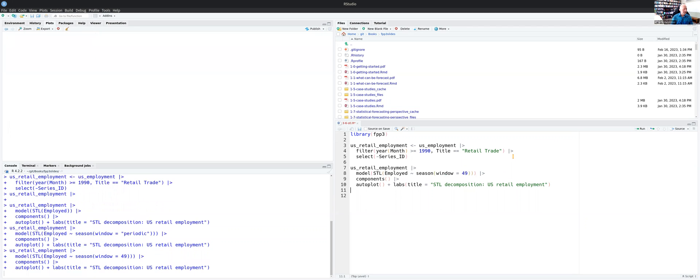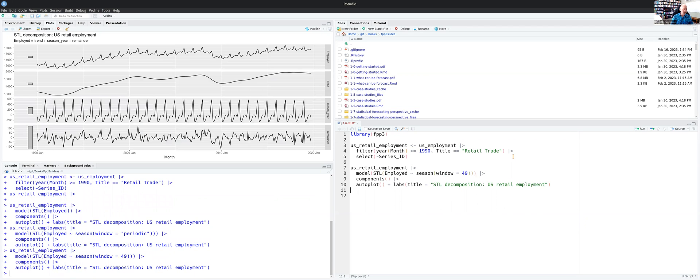which means that when it averages the seasonal patterns to form the moving average of seasonal components, it's going to use a window of 49 years, which is more years than we've got here. But because of the weighting, we do see some small variations over time.